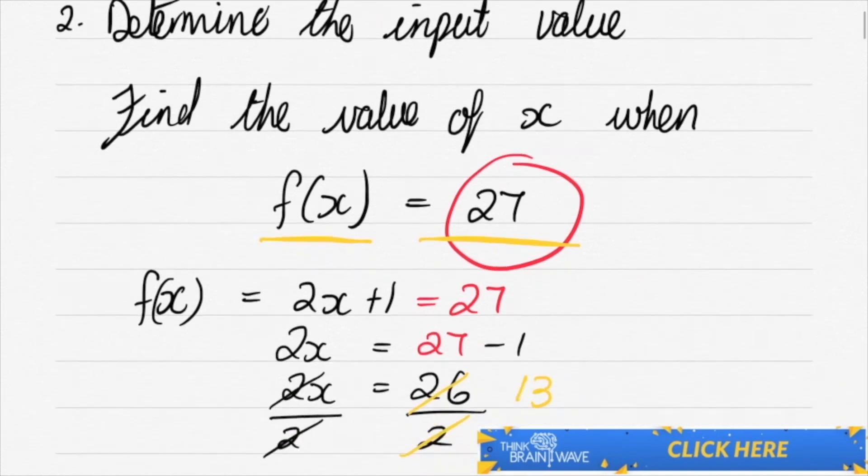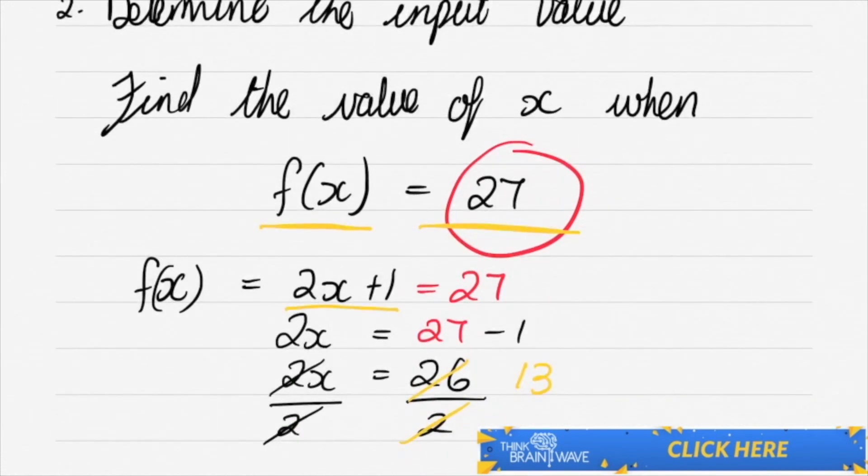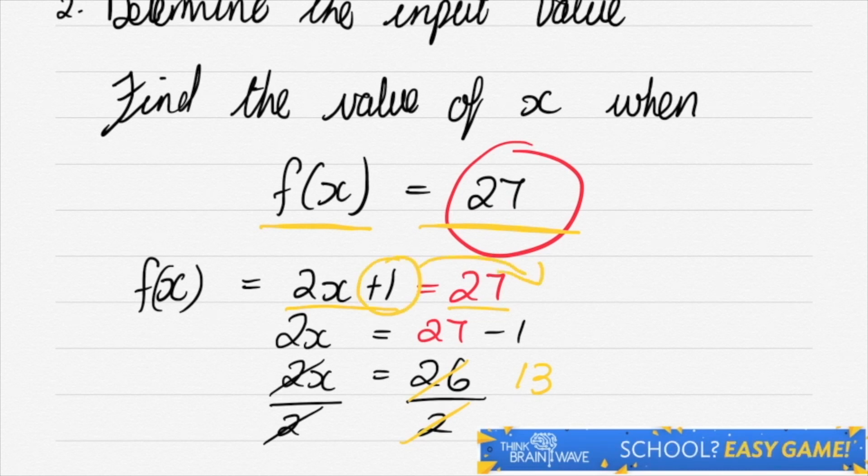We then move all of our same type units across to one side and the others to the other side, so you have all your X's on one side and your numbers on the other side.